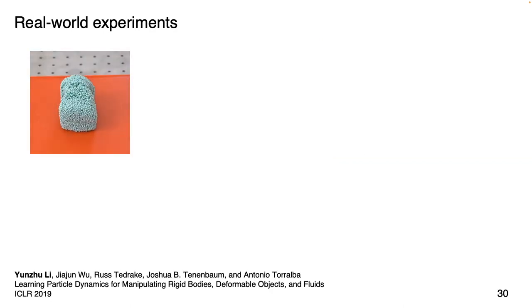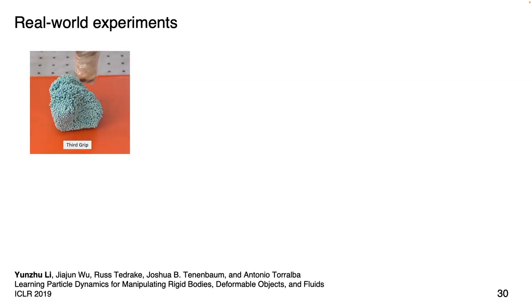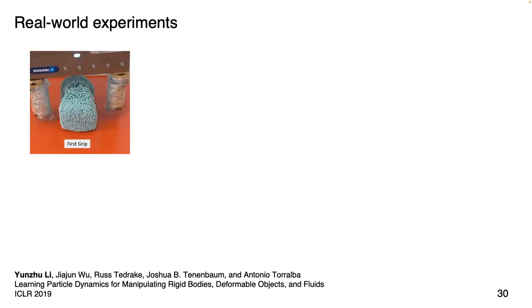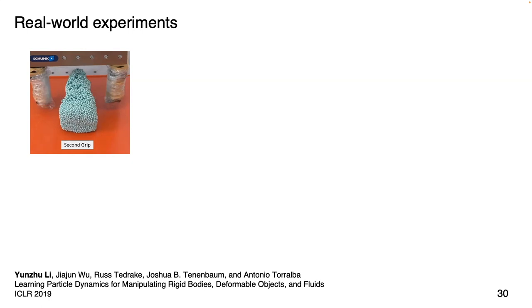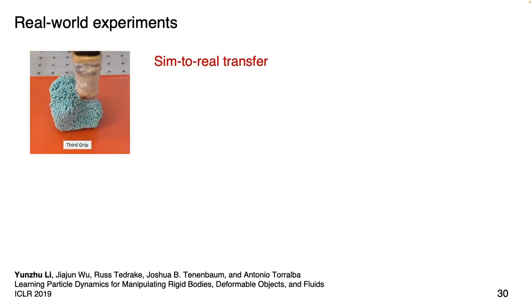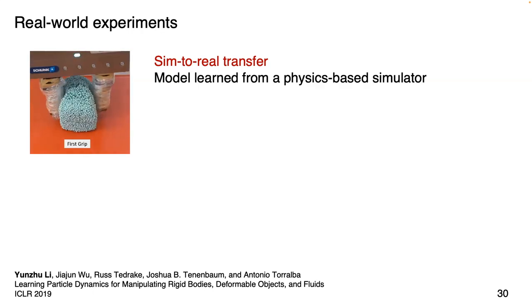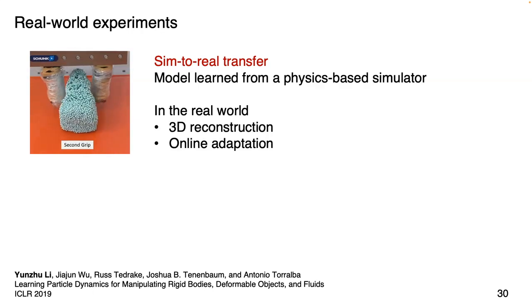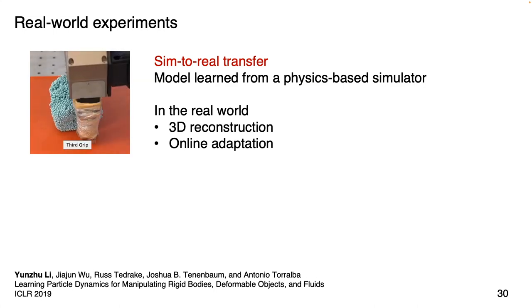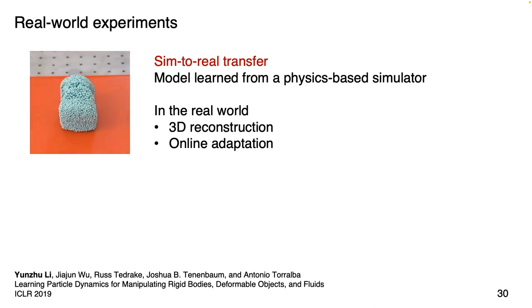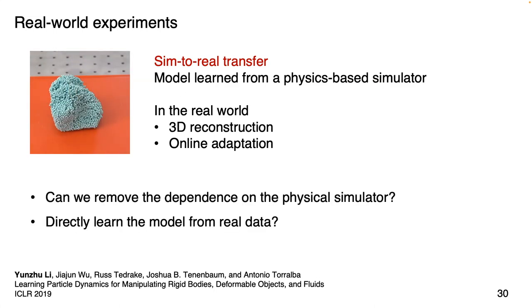Part of me is a roboticist, and what I care about most are results in the real world. The key to success in the previous method is sim-to-real transfer: we learn the model from a physics-based simulator, then use 3D reconstruction to obtain the shape and online adaptation to estimate physical parameters like stiffness for transfer to the real world. However, we do not have a simulator that can simulate everything around us, so we asked whether we can remove the dependence on the physical simulator and directly learn the model from real data.